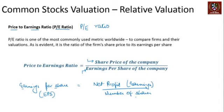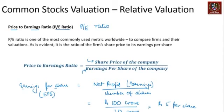EPS essentially defines the profitability being shared with each shareholder holding one share. The company may choose to give this as a dividend or not — that's a separate issue. For example, if a company's net profit is 100 crore rupees and there are 20 crore shares, then for every share you hold, you are entitled to ₹5 per share. If the share price is ₹60 and EPS is ₹5, the PE ratio is 12. We will come to why this is important in a moment.